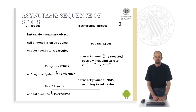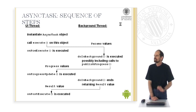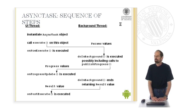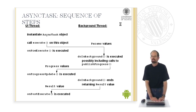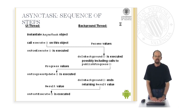In this diagram you see the sequence of steps. First, the user interface thread creates an AsyncTask object and calls execute on it. The parameters passed to this call are sent to the background thread's doInBackground operation. Before that, onPreExecute is executed by the user interface thread. The background thread executes doInBackground completely concurrently to the user interface thread, possibly calling publishProgress one or multiple times, which triggers onProgressUpdate in the UI thread. Finally, doInBackground returns a value of type Result, which triggers onPostExecute, executed by the user interface thread to receive the results.